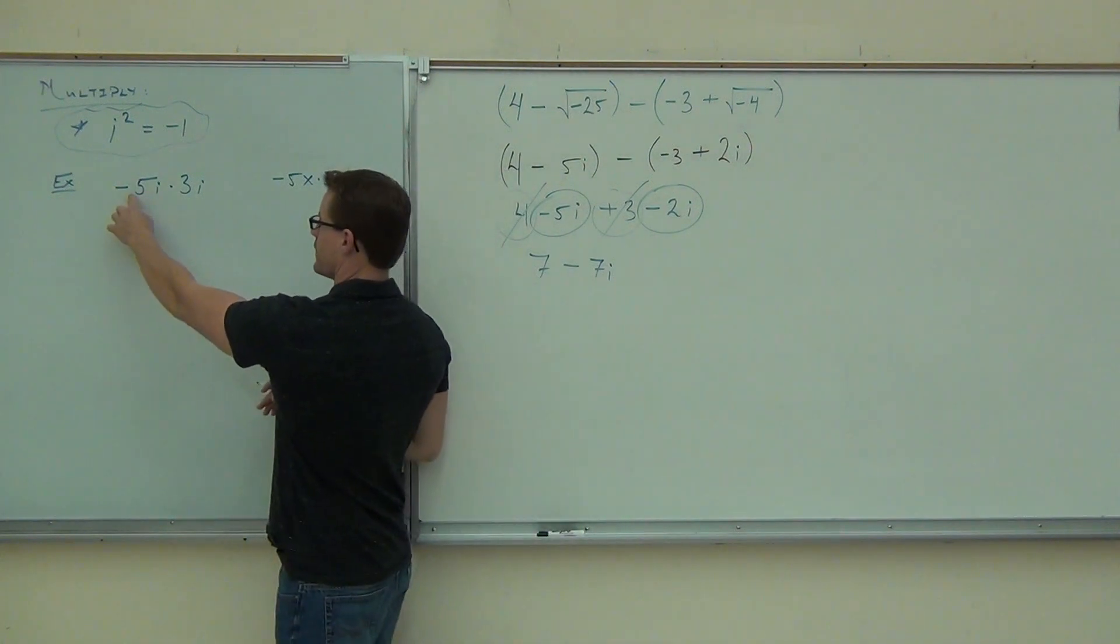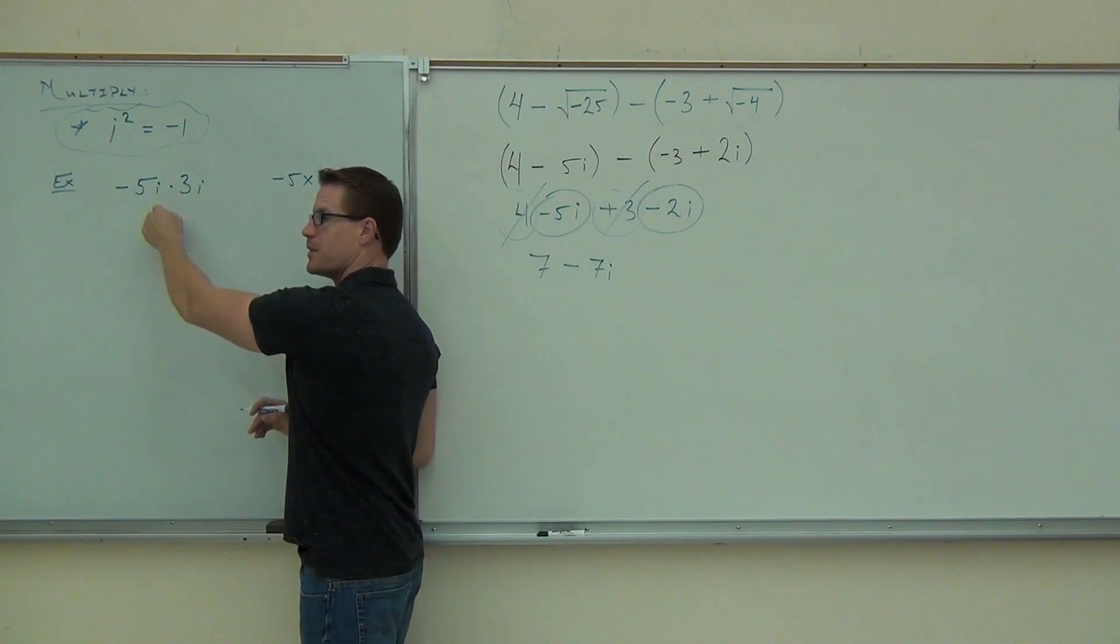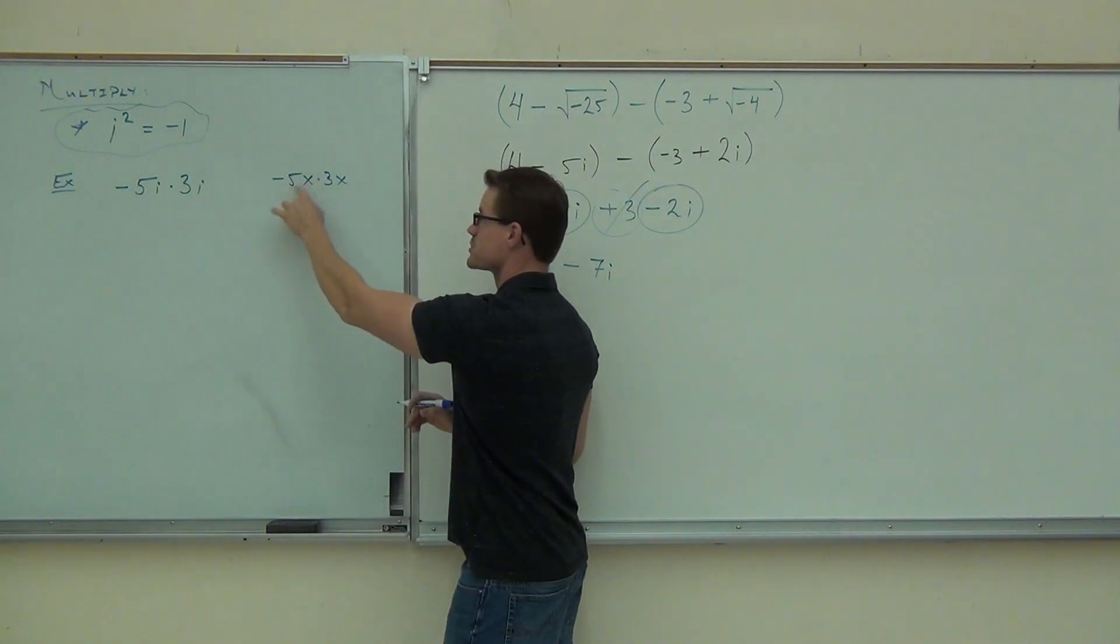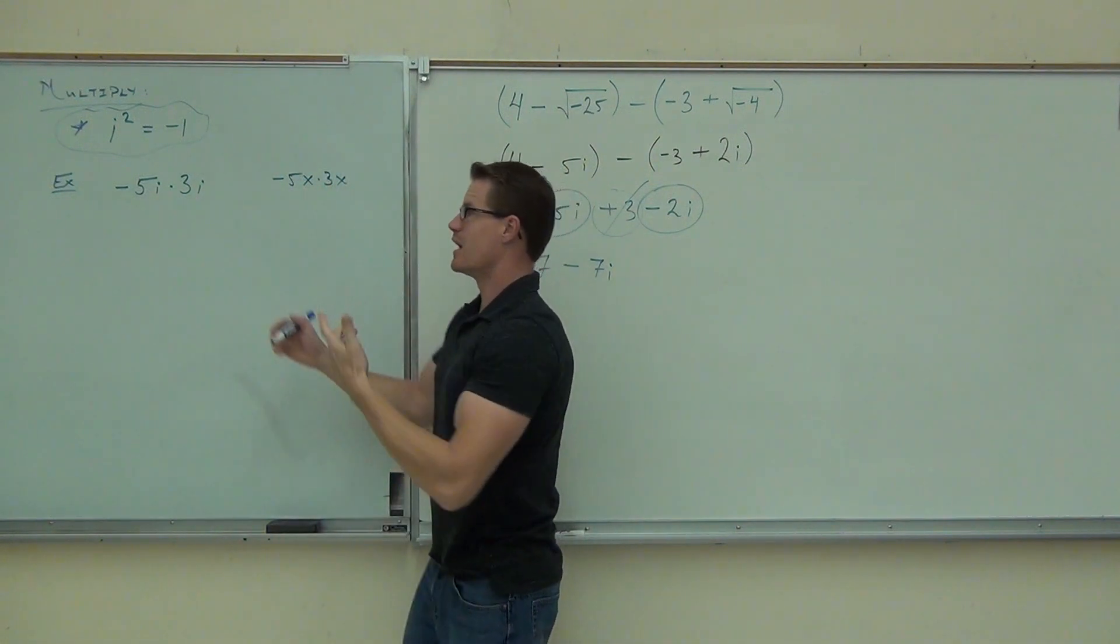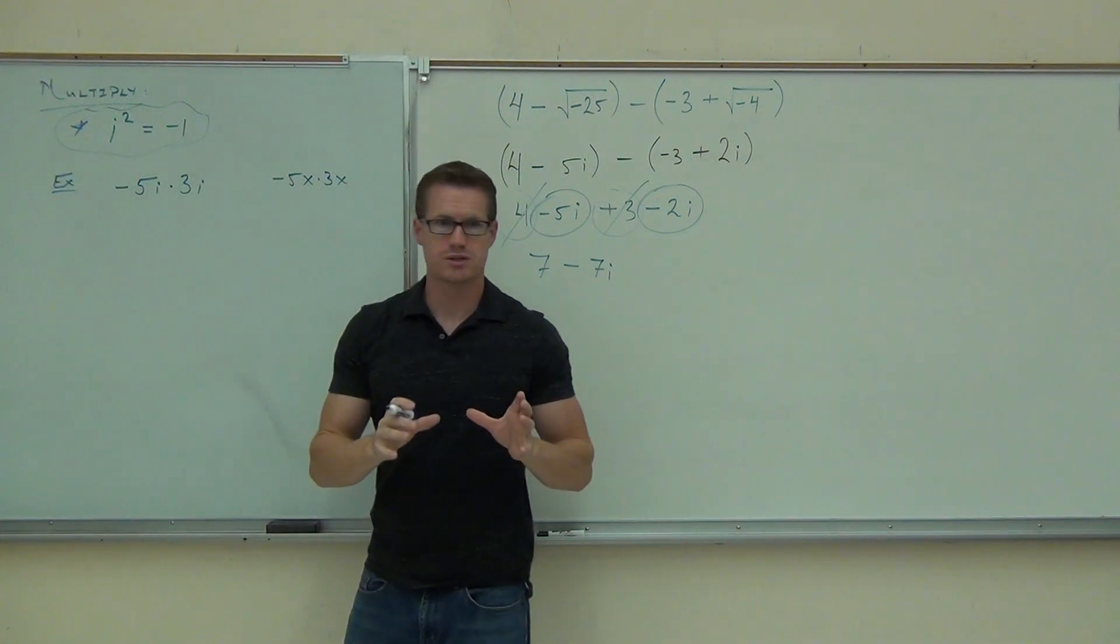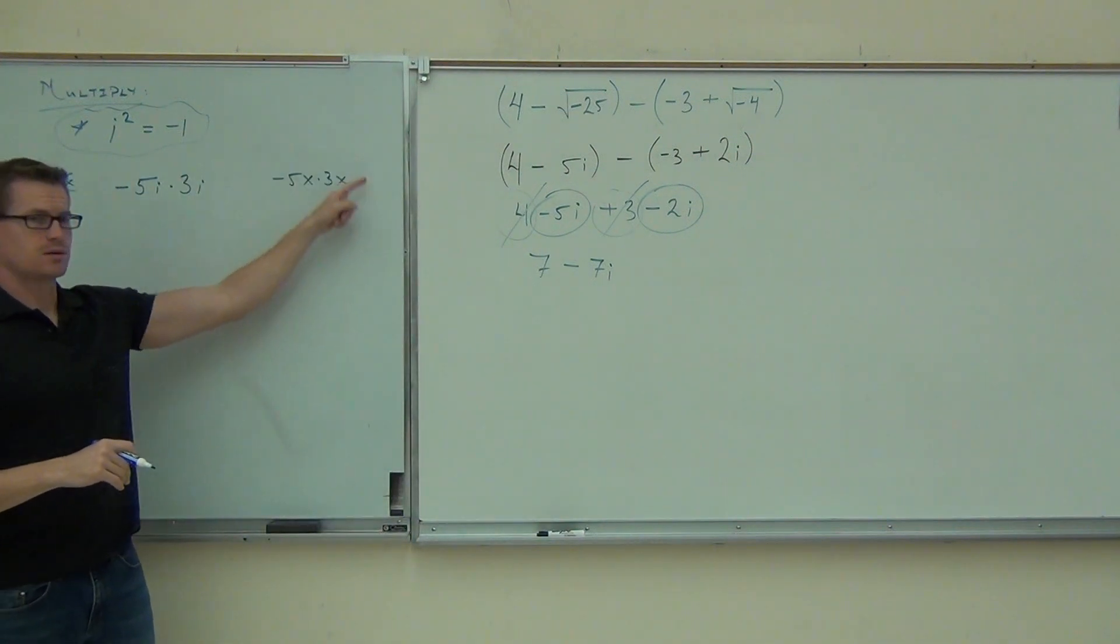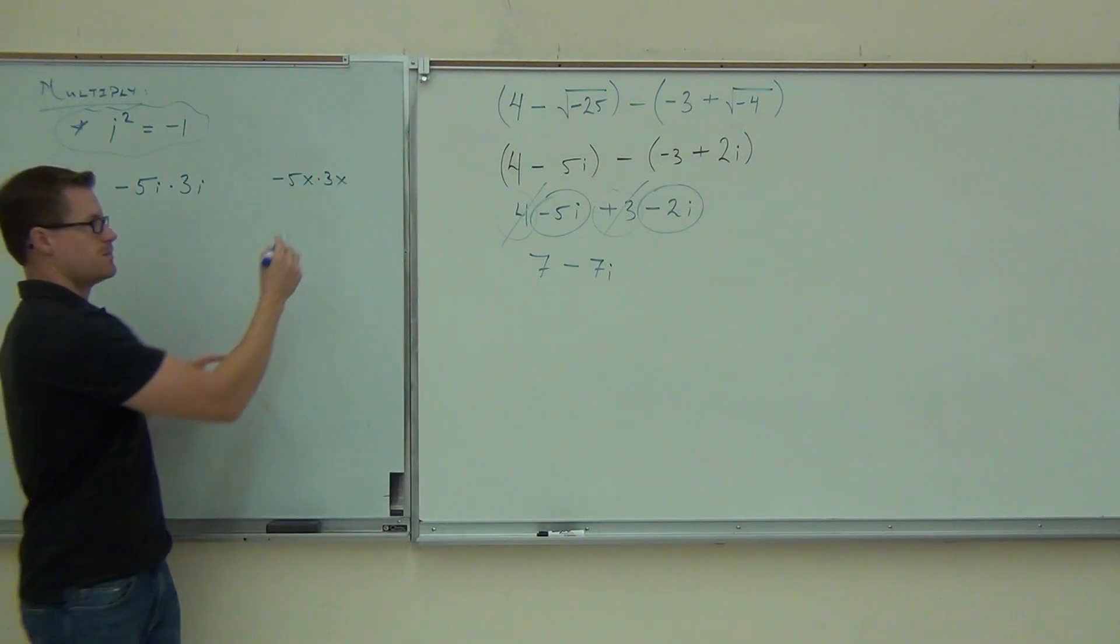You're multiplying negative 5i times 3i. You're going to be multiplying the numbers together. You're going to be multiplying the i's together, just like you multiply the numbers together here and the x's together. While this isn't a variable, it is a root, and we know that those roots get multiplied just like any other numbers do. What would you get out of this problem here? Negative 15x squared.